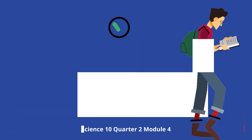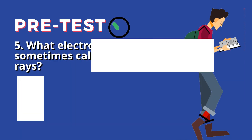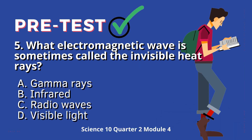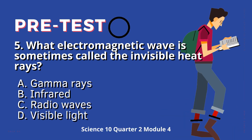Question 5: What electromagnetic wave is sometimes called the invisible heat rays? A. Gamma rays. B. Infrared. C. Radio waves. D. Visible light.